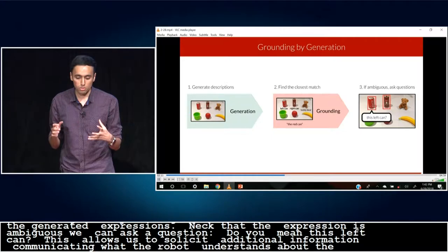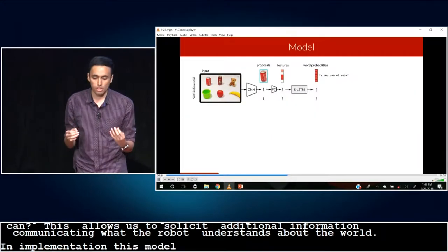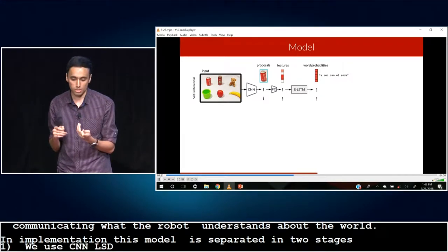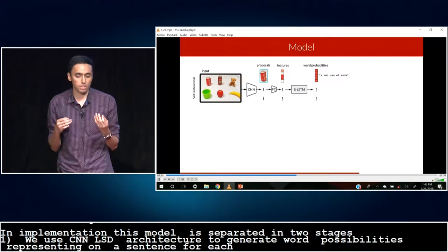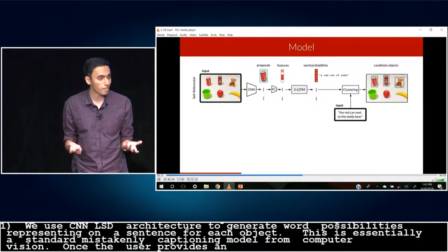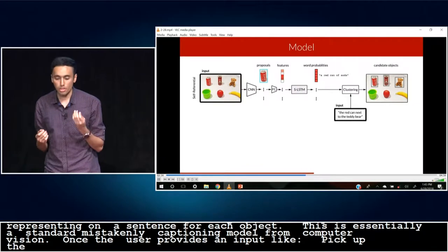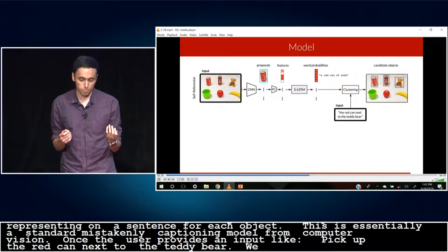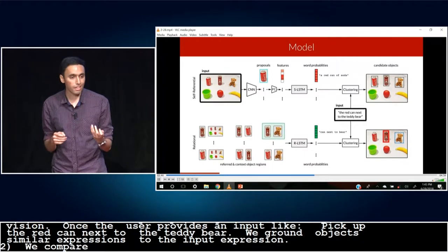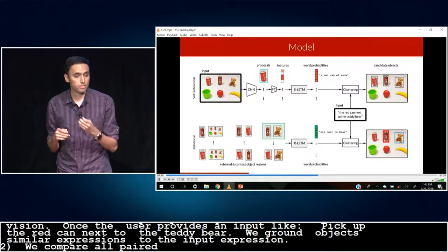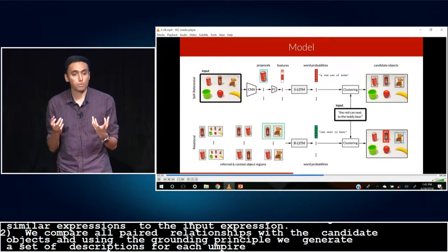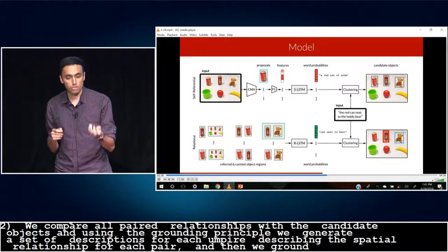In implementation, this model is separated into two stages. In the first stage, we use a CNN LSTM architecture to generate a set of word probabilities representing a sentence for each object. And this is essentially a standard image captioning model from computer vision. Once the user provides an input, like pick up the red can next to the teddy bear, we ground by clustering objects, which generated very similar expressions to the input expression. In the second stage, we examine all pairwise relationships of the chosen candidate objects. And again, using the grounding by generation principle, we generate a set of descriptions for each pair, which describe the spatial relationship for each pair. And then we ground by clustering pairs, which generated very similar expressions to the input expression.